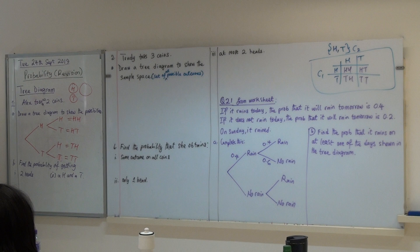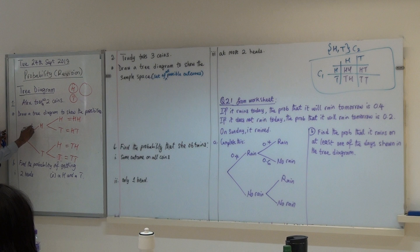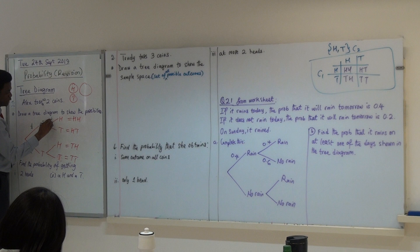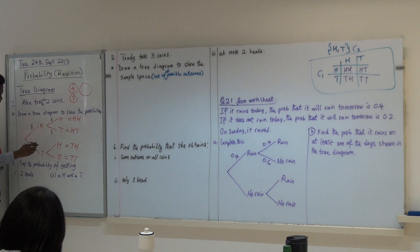So now, this is the tree diagram that shows the possibilities. Now, for a normal coin, the chance of throwing a head is the same as the chance of getting a tail. Am I right? Talk to me please. Yes. For a normal coin. Also here, the chance of throwing a head is also the same as the chance of throwing a tail. And so on like that. Okay?